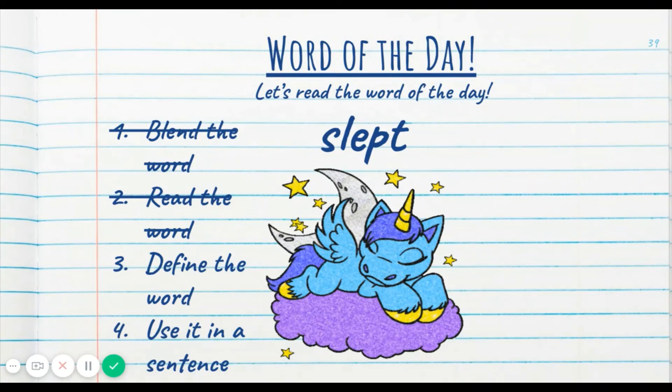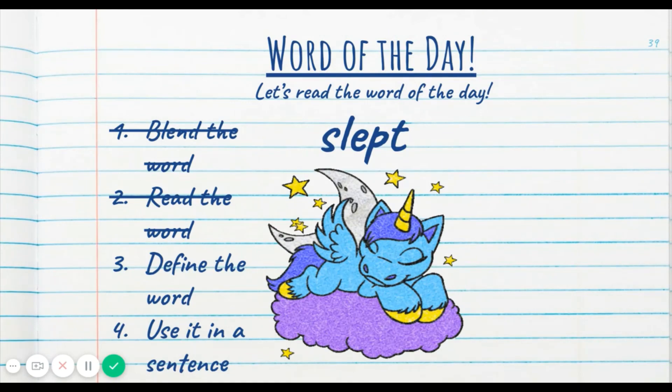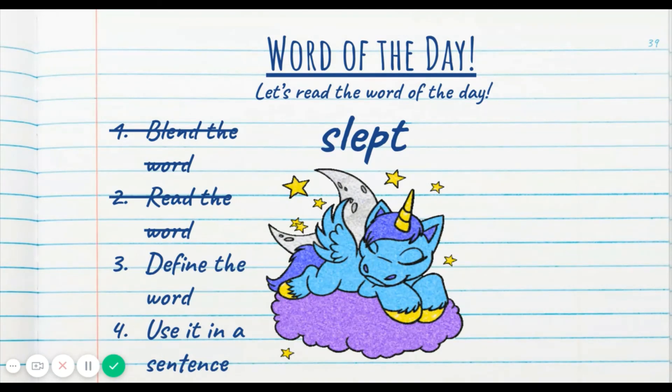All right. Bridget, are you awake? Oh man. So we've blended the word, we've read the word, now it's time to define the word. That means find out what the word means. So if I were to go to sleep and I wake up, I could say I had a good night sleep and I slept like a baby. It's just the past tense of sleep. So if I want to describe someone going to sleep, I might say they slept over there. It's just another way of talking about sleep, like this precious unicorn. Okay, now that we've defined the word, it's time for our last task which is to use it in a sentence.